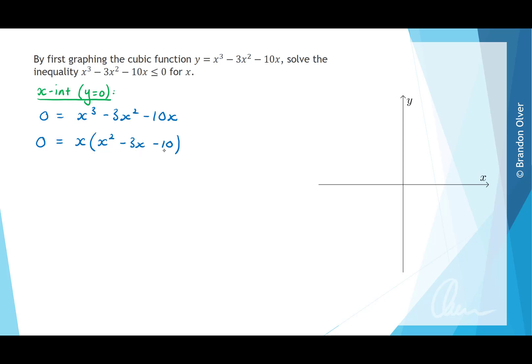And now we can fully factorize this so that we can use the null factor law. So this means that 0 equals x times, and we're looking for the factors of negative 10 that add up to give negative 3. So we can use x minus 5 and x plus 2 as those numbers.